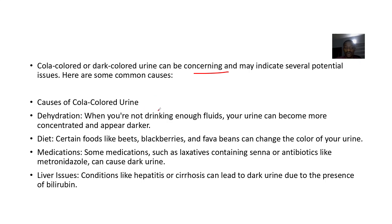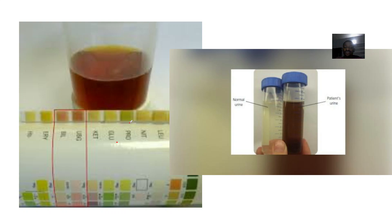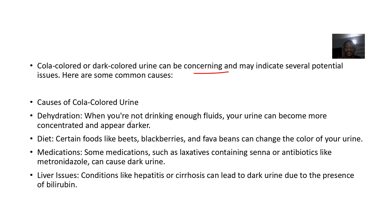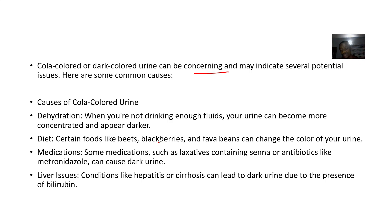So causes of this cola-colored urine: sometimes if you are dehydrated — you haven't drunk enough water for a while — your urine can become concentrated because the body is reabsorbing from the proximal convoluted tubules, reabsorbing back what it needs. Sometimes it's diet — eating a lot of beets, blackberries, fava beans — all of this can actually influence the color of your urine. Then sometimes it's side effects of some medications, like laxatives containing senna or antibiotics like metronidazole — all of this can actually cause dark urine.